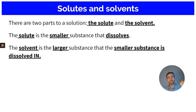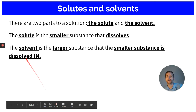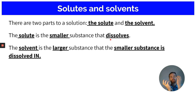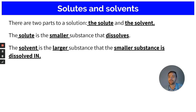We have salt and we have water. Let me get my pointer out. The solute is the smallest substance that dissolves. So when we take salt and water and mix them together, the smaller substance is the salt because there's less salt than there is water. The salt dissolves — it's the one we can't see anymore. So the salt is the solute; it's the one that dissolves.